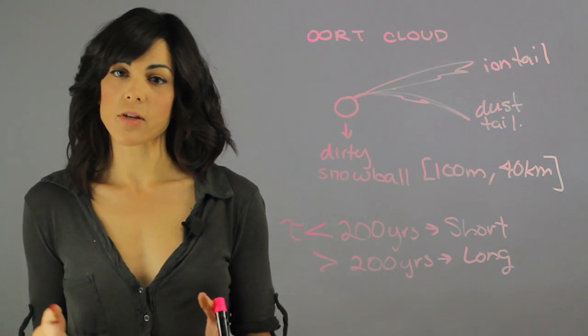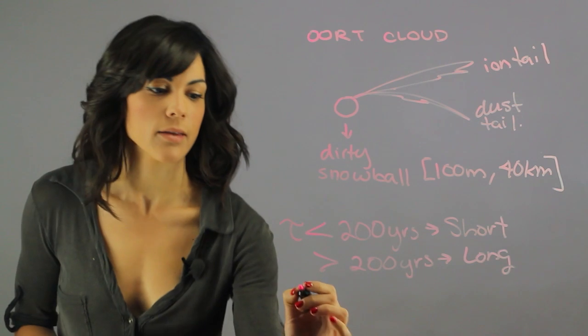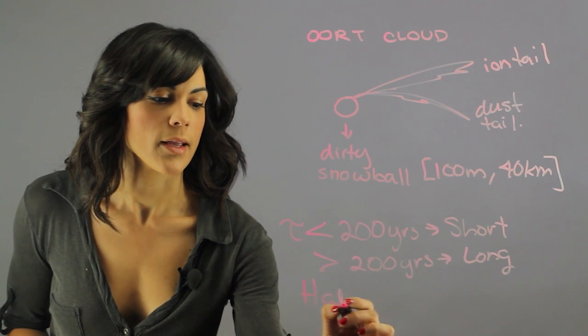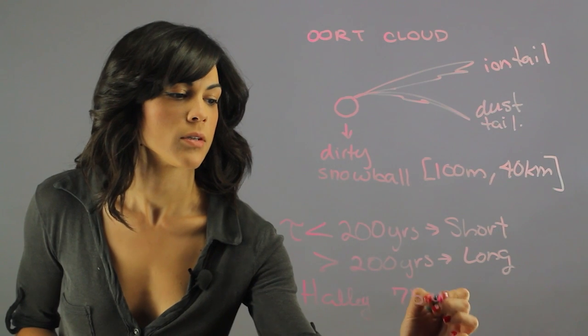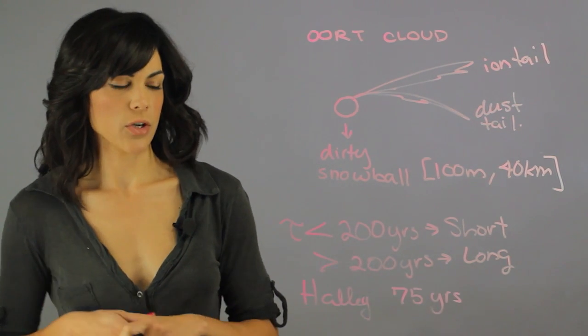The most famous comet is Halley's comet, and it has a period of 75 to 76 years.